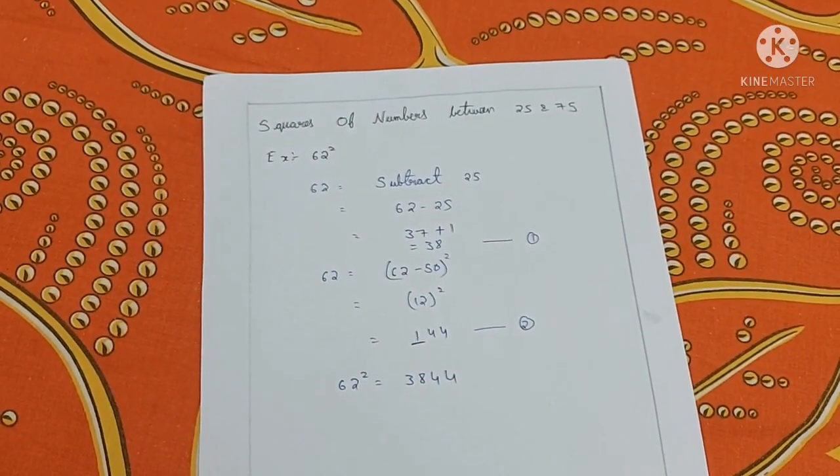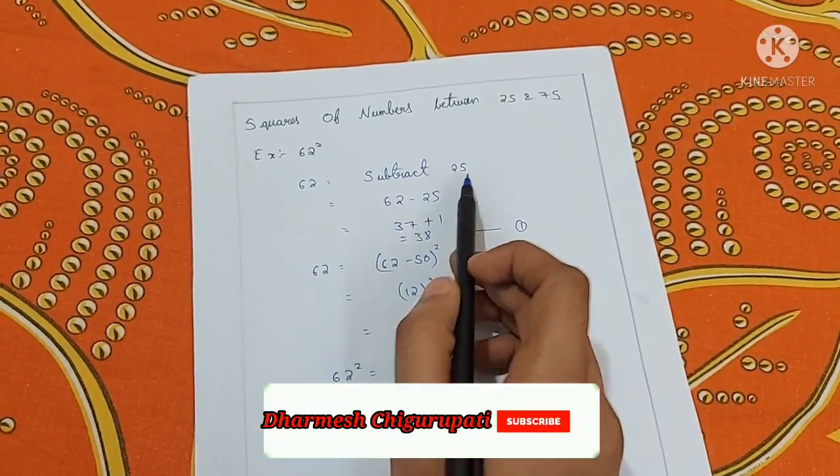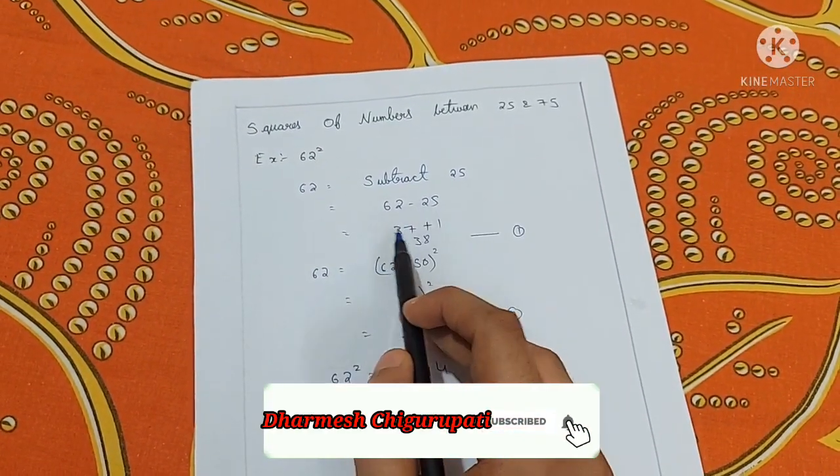Let's take one more example to understand easily. 62 square. Now subtract it with 25. That is 62 minus 25 gives 37.